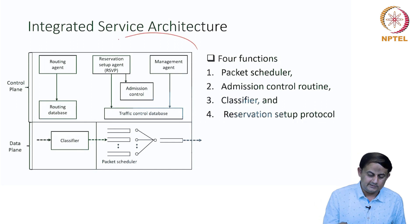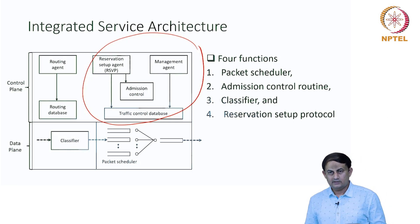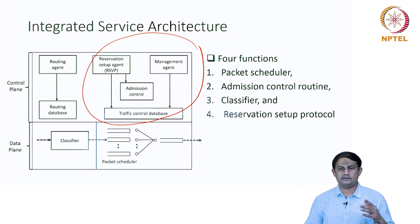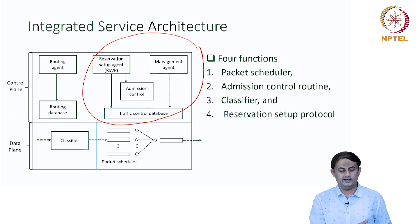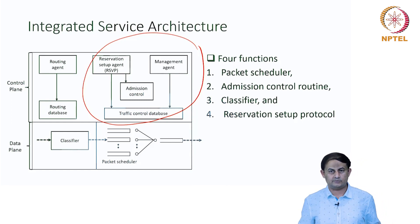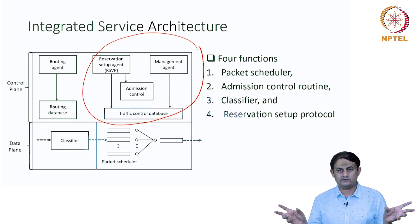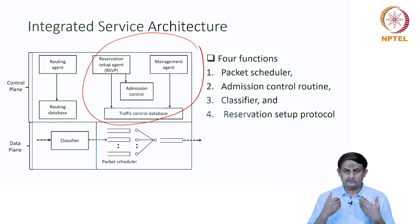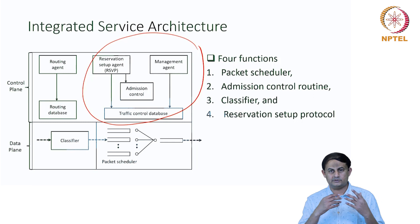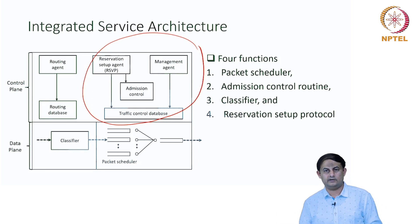We add several components to the control plane. Specifically, there is a management agent through which the application can specify its quality of service requirements — parameters such as bandwidth, throughput, and delay. There is a reservation setup model which reserves resources all along the path across different routers. There is also a component called admission control, which decides when a new flow starts whether to admit that particular flow or not.